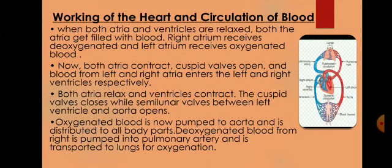When both the atria and the ventricles are relaxed, both the atria get filled with blood. The right atrium receives the oxygenated blood from the various parts of the body, and the left atrium receives the oxygenated blood from the lungs by the pulmonary veins.